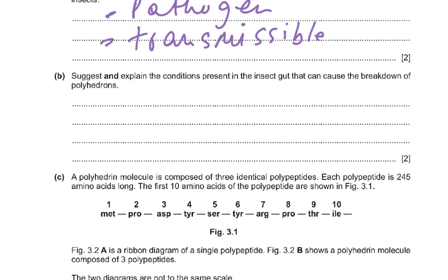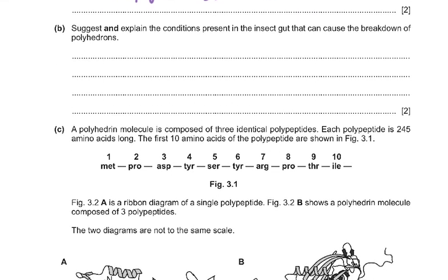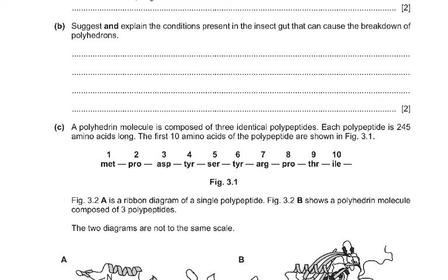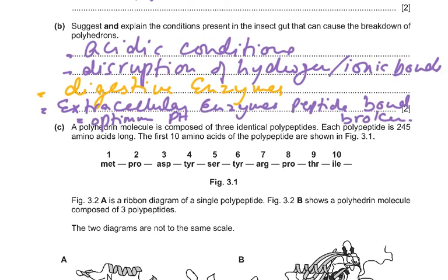Part B suggests and explains conditions in the insect gut causing breakdown of polyhedrons: acidic conditions disrupt hydrogen and ionic bonds; digestive enzymes (extracellular enzymes) break peptide bonds; the gut provides an optimum pH for enzyme activity.